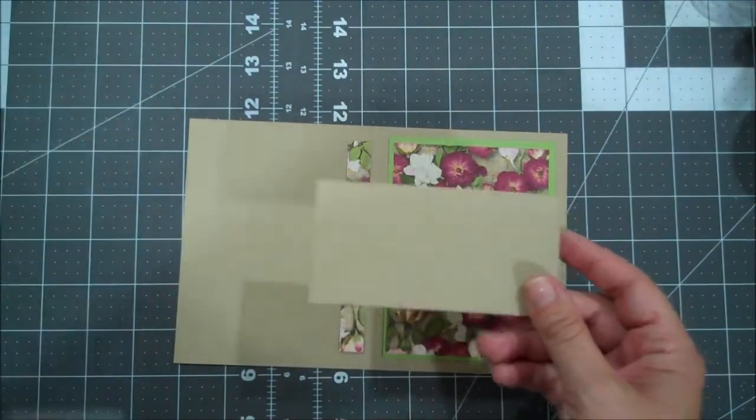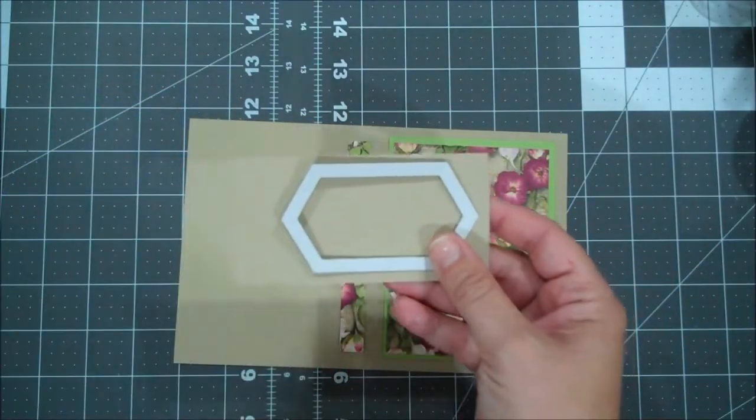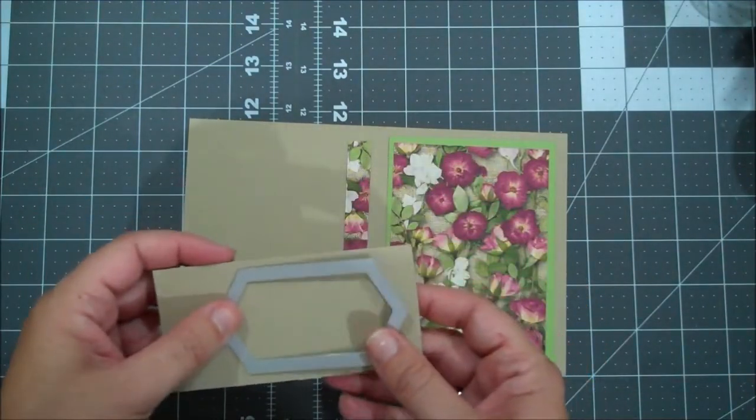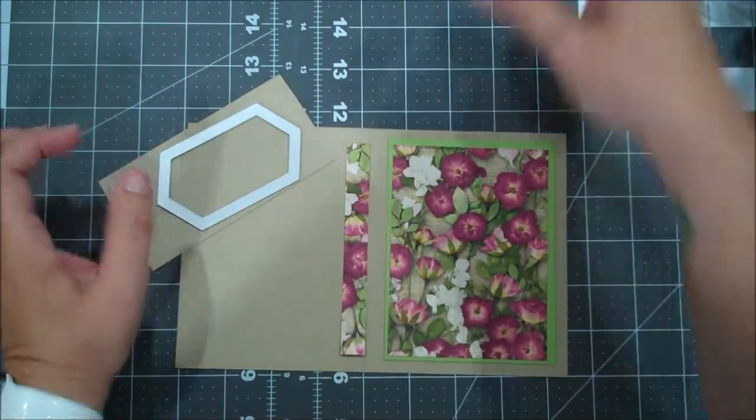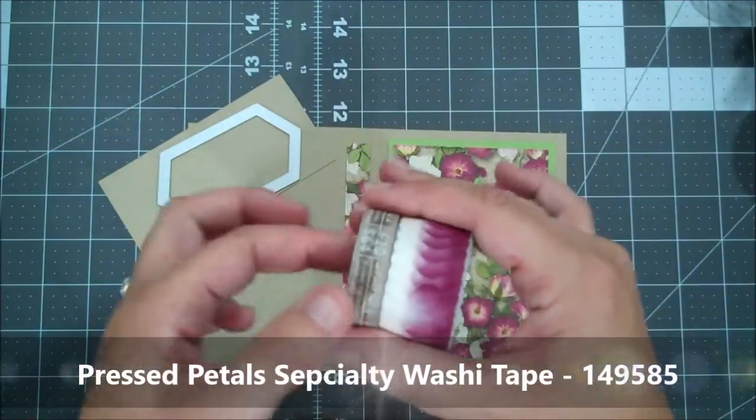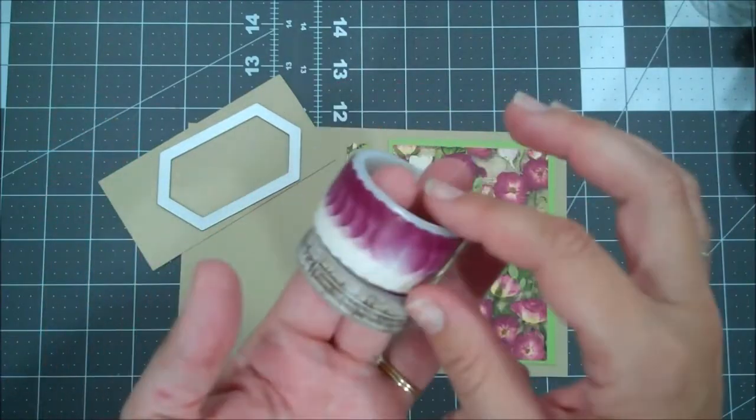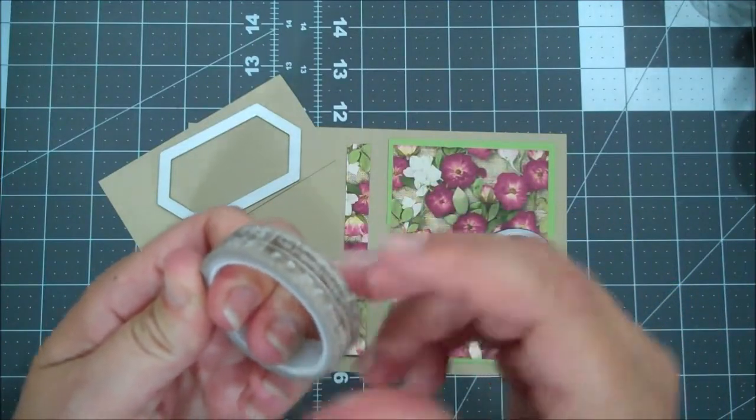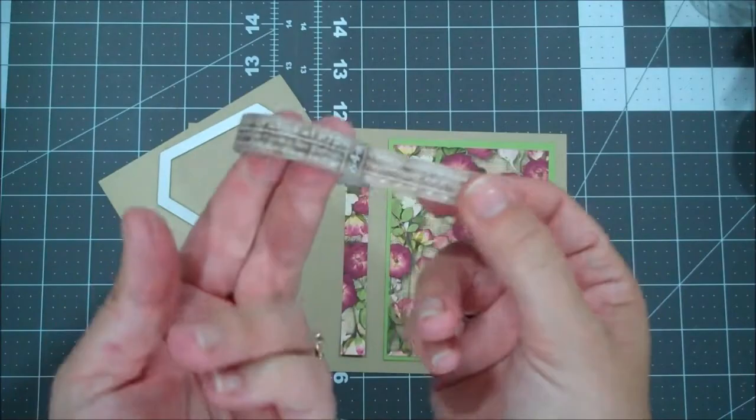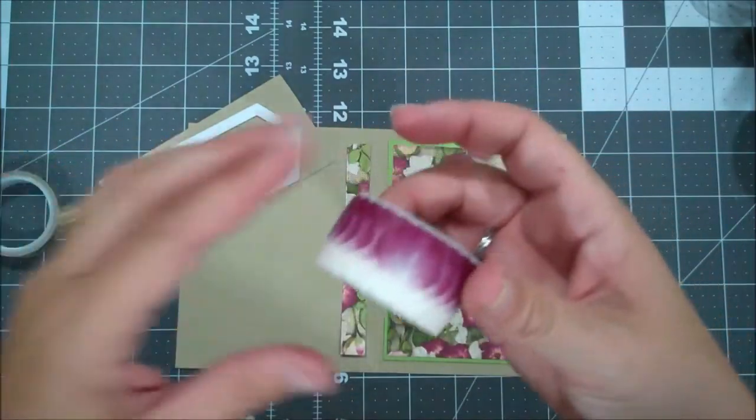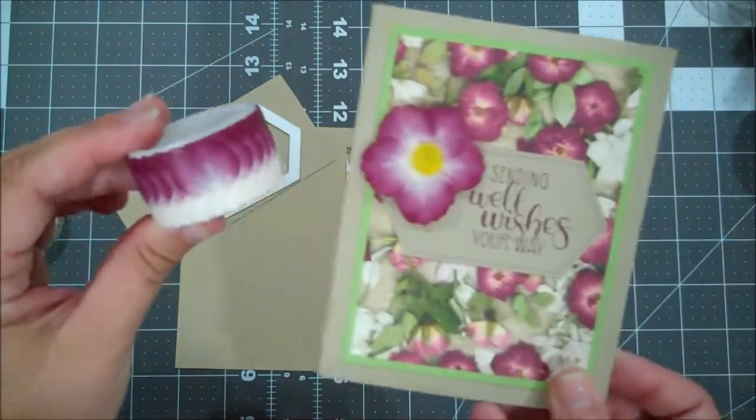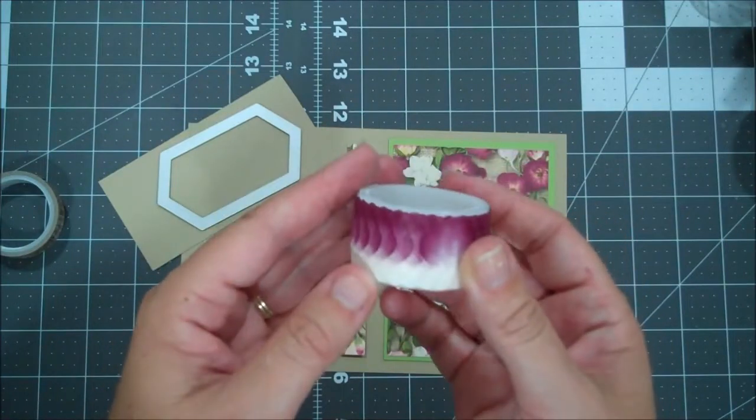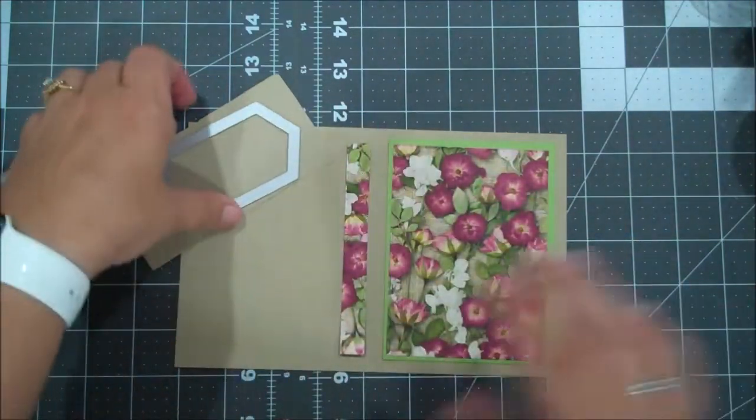I just have a scrap piece of crumb cake that we are going to use for our sentiment label. We are using our stitched nested labels to cut our piece for the front. And then here is the beautiful washi tape - this was a two-pack washi tape and this is not your standard washi. These are actually the petals to create the flower, so there's a hundred petals on here on this roll and it's so fun and so easy to do.